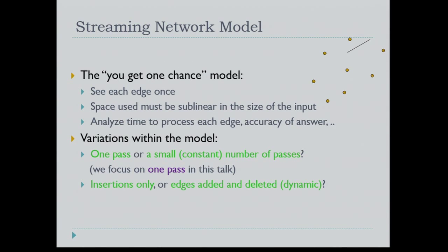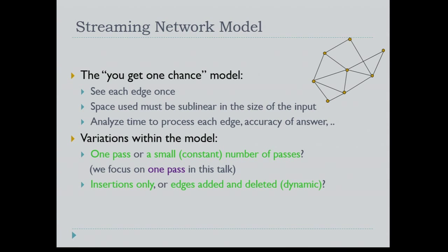The exact model we assume for the rest of the talk: edges arrive one by one, we see each edge once — once it is gone we cannot come back to it — and the space should be sublinear in the size of the input. We also analyze the time to process each edge, called the update time, and the accuracy of the answer. Variations include one pass or a small number of passes; here we consider one pass. The model can also be insertion-only, or allow both insertions and deletions — the dynamic case, which has strong motivations.